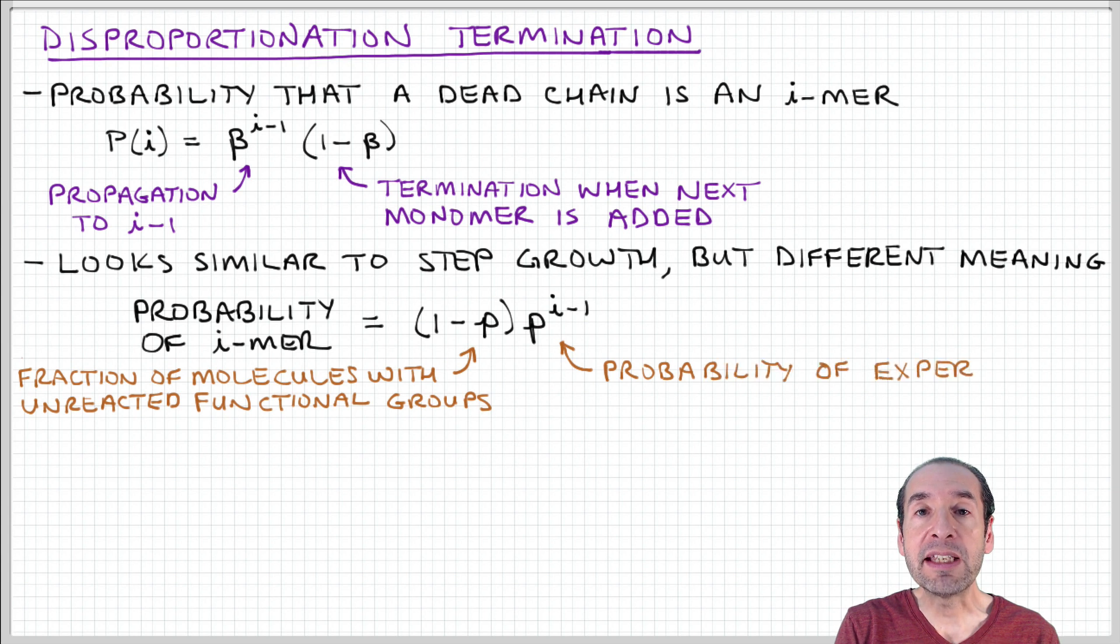But the meaning is different. Remember, β represents the probability that the chain will continue to propagate an active chain. P is an extent of reaction that represents the fraction of molecules with unreacted functional groups. So this term P^(i-1) represents the probability that the chain has experienced i-1 reactions.